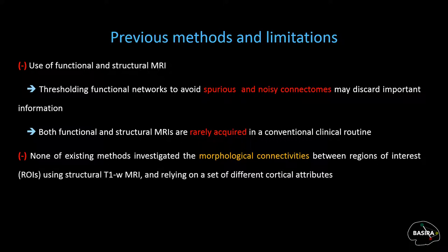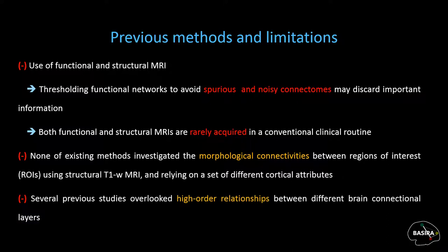On the other hand, many other studies have demonstrated the importance of considering cortical measures derived from the multifolded surface of the cerebral cortex for AD diagnosis, but none of them investigated the morphological connectivities between brain regions of interest (ROIs) using structural T1-weighted MRI. Besides, while some studies are based on a multi-layer network, several works on network-based methods developed for MCI/AD classification overlook the high-order relationship between different brain connectional layers.